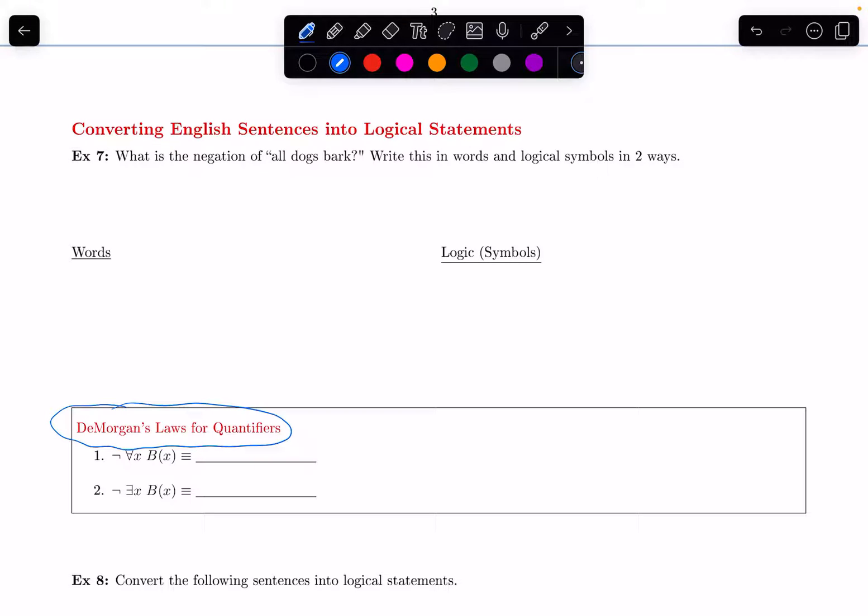In this video, we are going to go over DeMorgan's Laws for quantifiers. We've seen DeMorgan's Laws for the and and or operators. Now we're going to look at what happens when we negate a quantifier. Is there another equivalent way we can express that? Let's look at an example to motivate this.